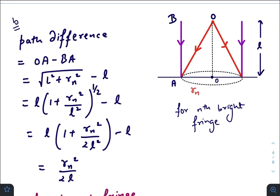OA is the square root of L squared plus r_n squared minus L. Of course, the fringe radius of the fringes are very small, so you can just take L squared common here, do some binomial approximation.